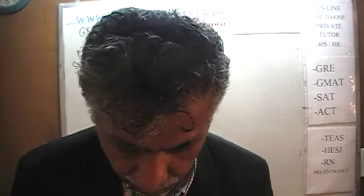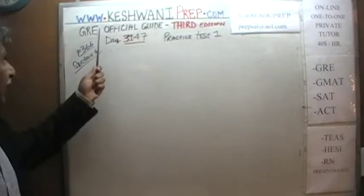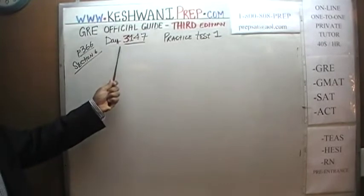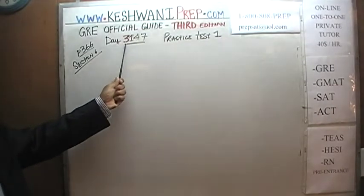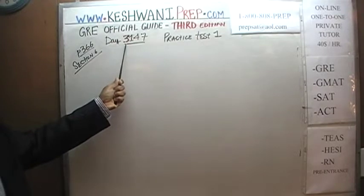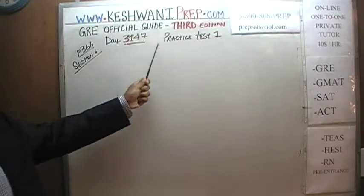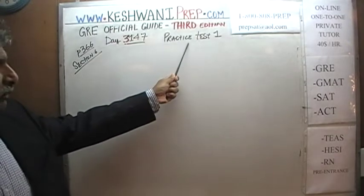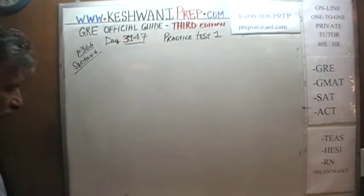Today is our lesson number 147, Day 3147. The three is to signify the fact that we are in the third edition — third edition, day 147. We are working on a practice test that you will find at the end of the book on page number 366, section 6.